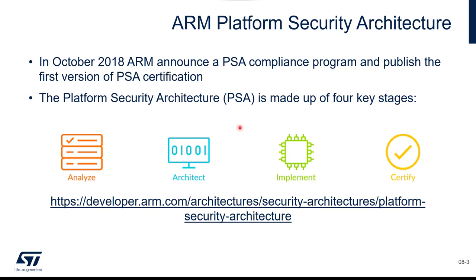In the architect stage you will find documentation about security architecture definitions. In implementation you will find API definitions, documentation about implementation, and a full release of an example implementation which is TFM. The last step is certification, where ARM defines with some labs how to certify your product, with three levels from level 1 to level 3. Level 1 is self-declarative, level 2 involves lab security testing and attacks, and level 3 involves advanced attacks. For the STM32L5, we have been certified level 2.